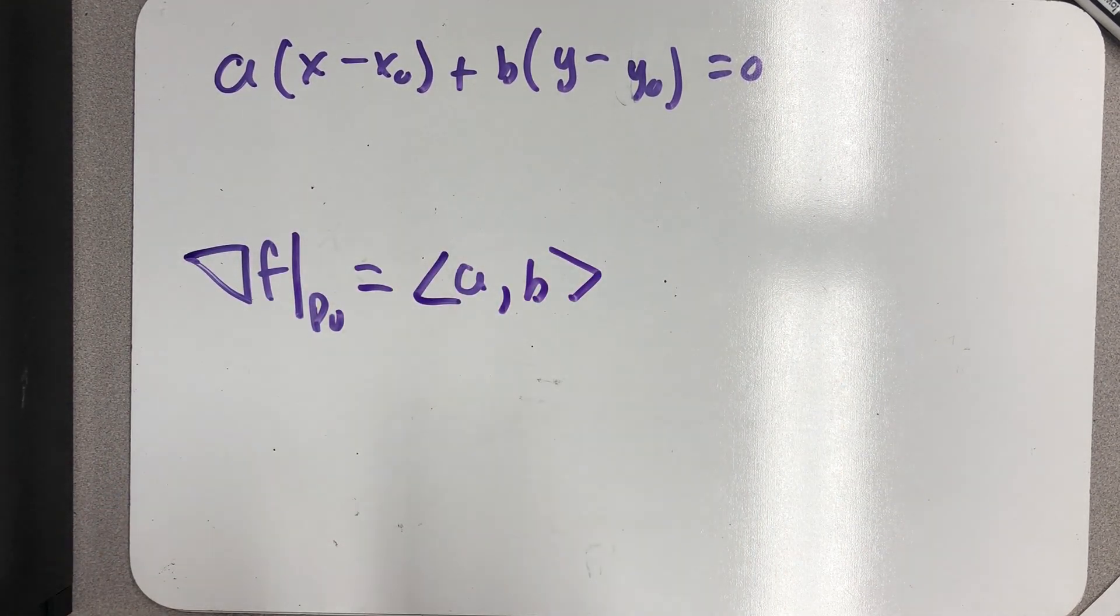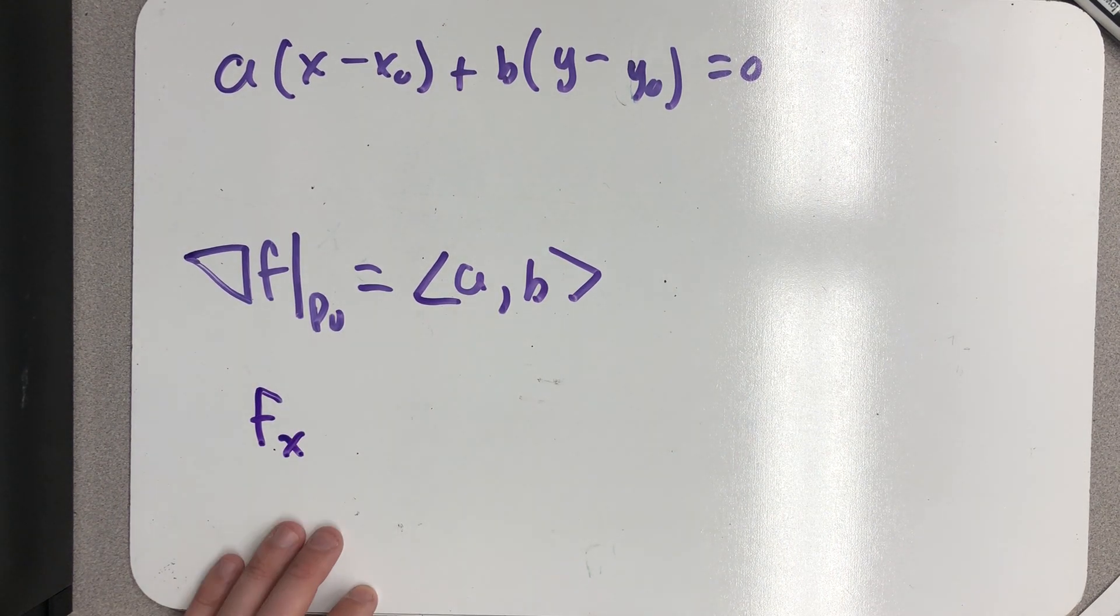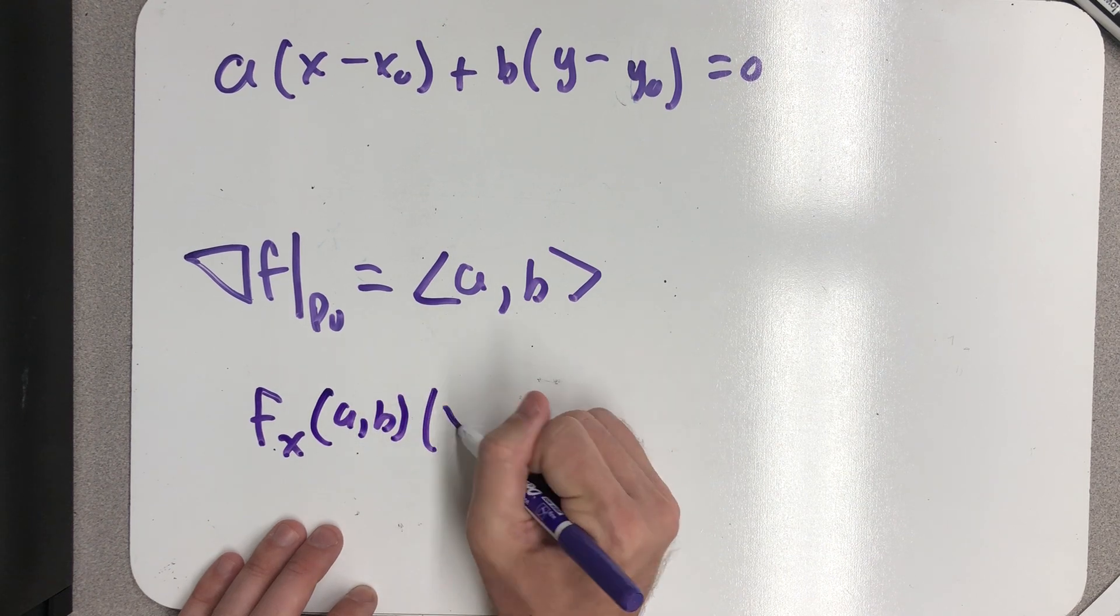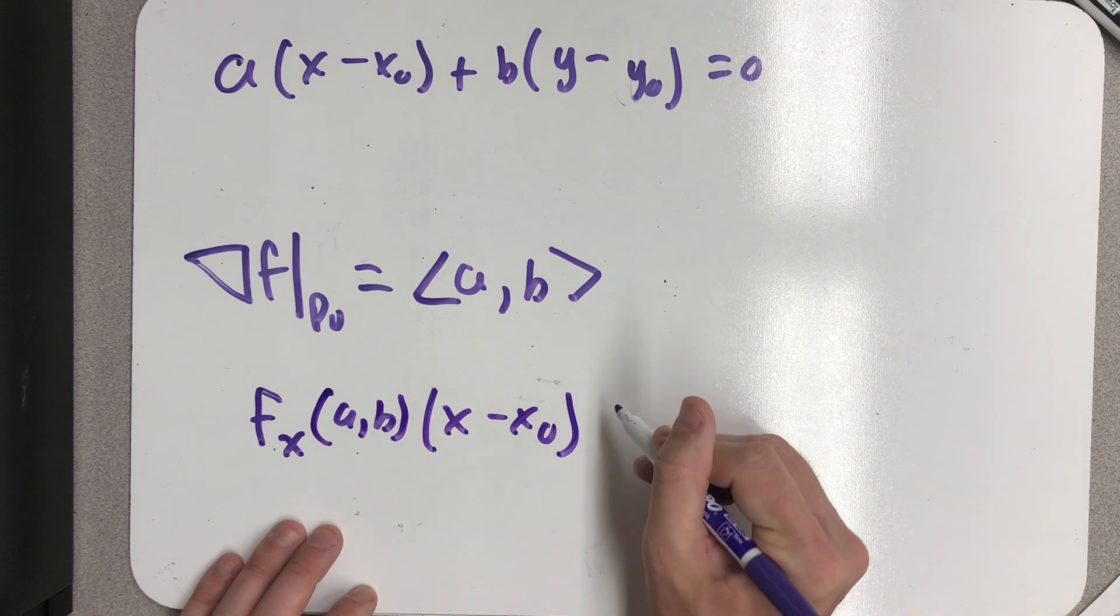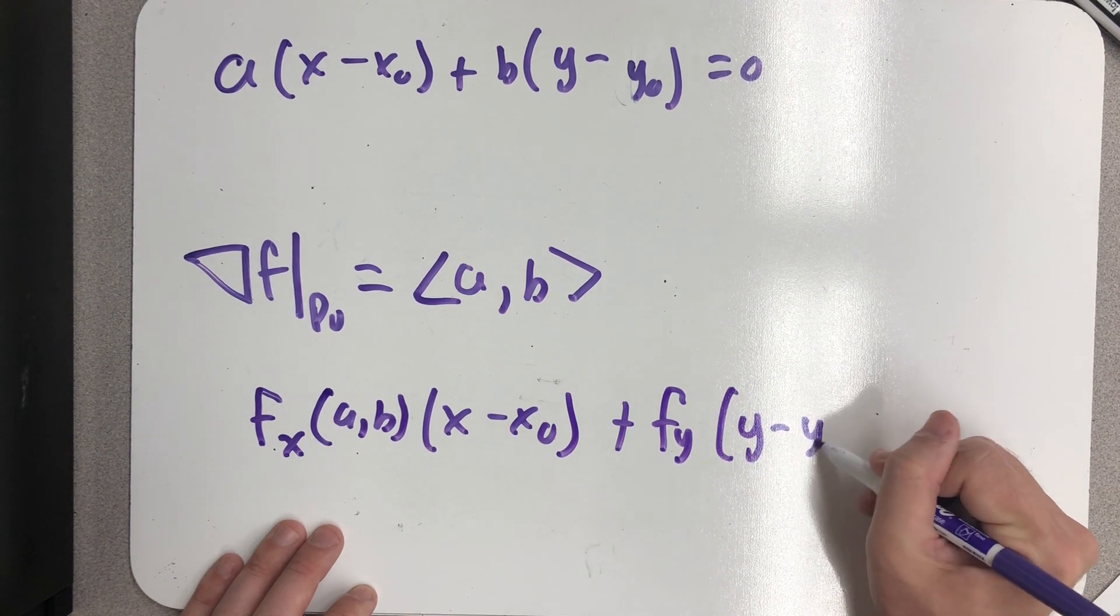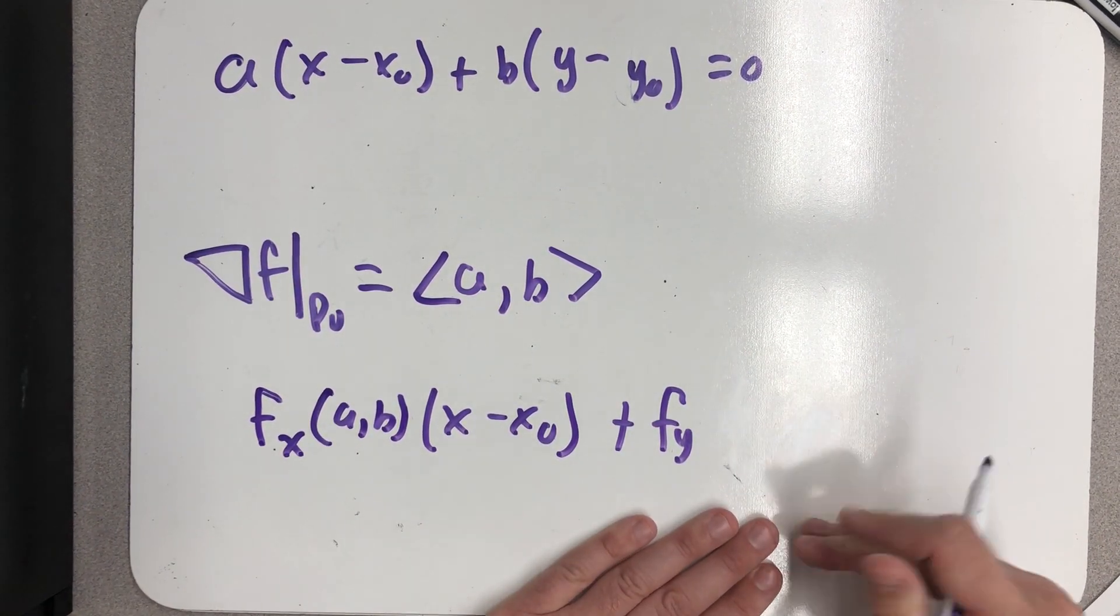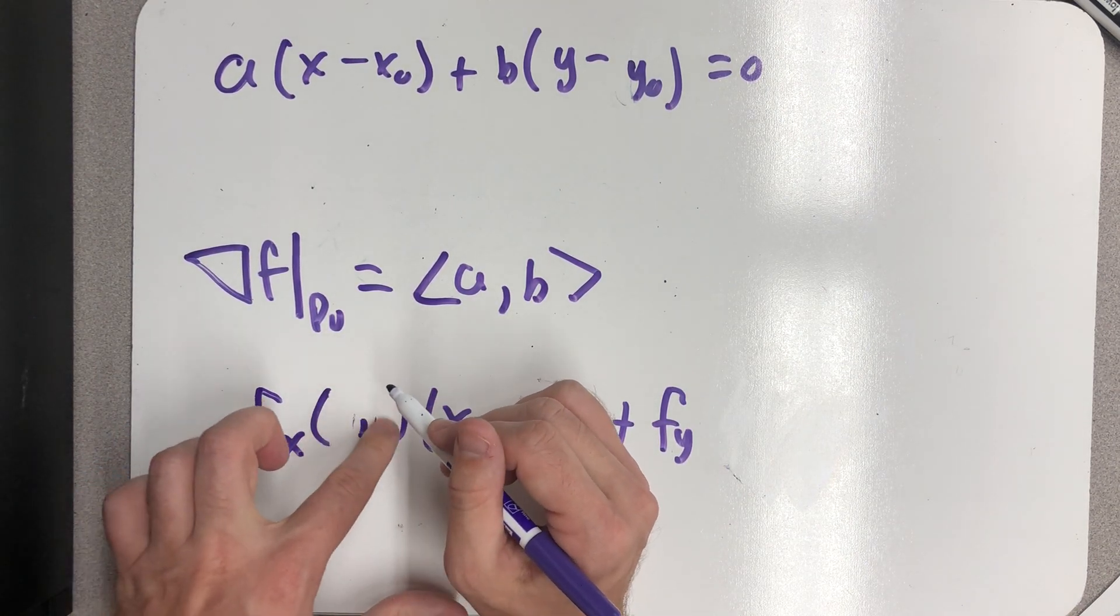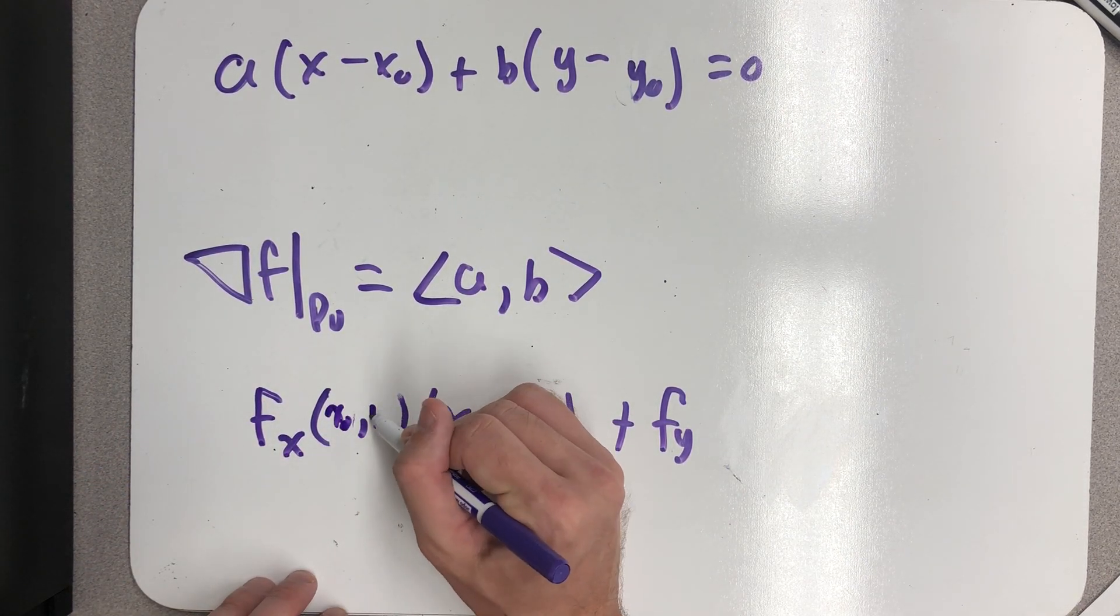So, now I can actually interpret that statement as the partial with respect to x evaluated at that point times (x - x₀) plus the partial with respect to y evaluated at that point times (y - y₀). And I need to get that x₀, y₀ goes in there. I'm evaluating at the point p₀.